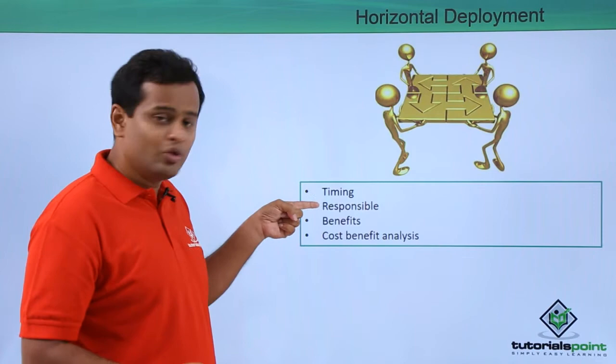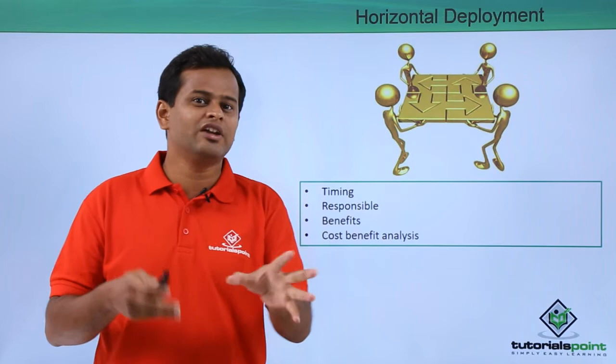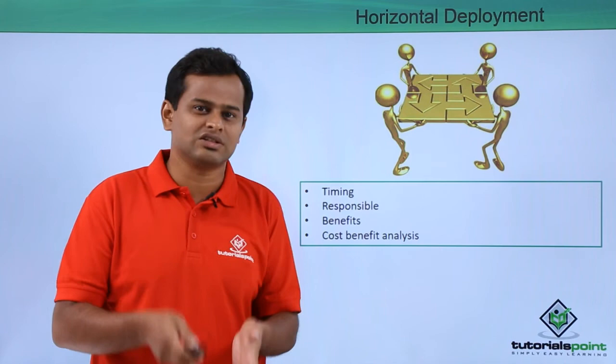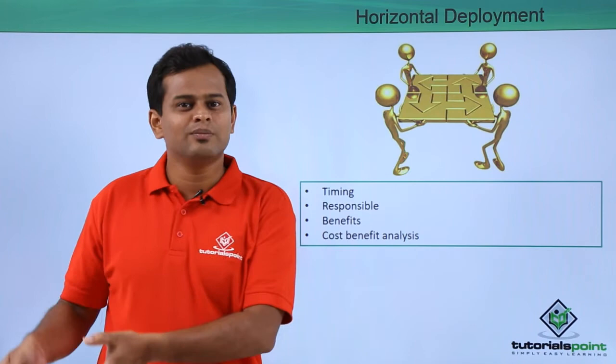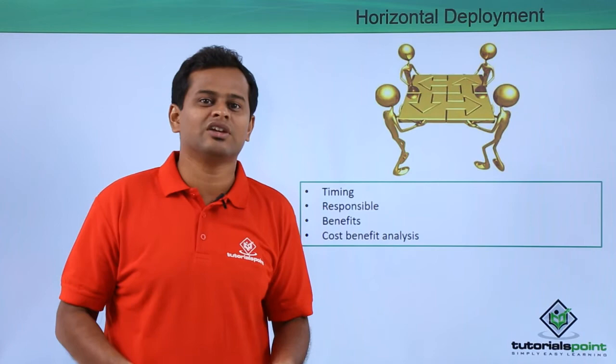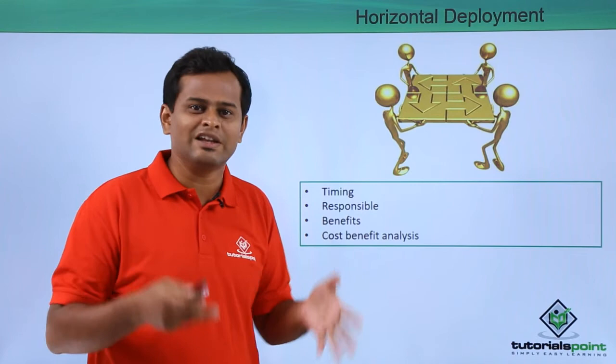With respect to horizontal deployment, we need to understand the timing of when it will happen and who is responsible. If we have five different plants, each plant will have a responsible person, so we can easily identify which plant is responsible for a given kaizen or lessons learned. The benefits coming out of each may vary — in certain plants there will be huge benefit, while in others there may not be as much, depending on the application. Each lessons learned case must be taken on a case-by-case basis.